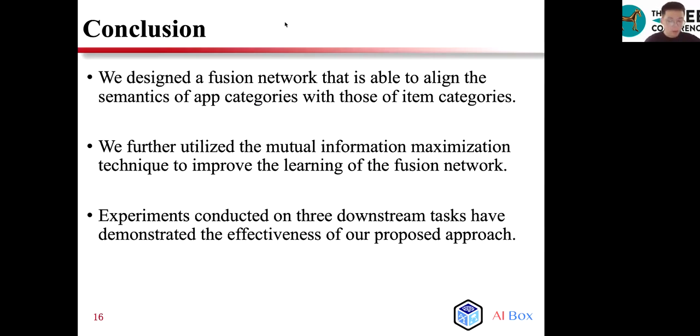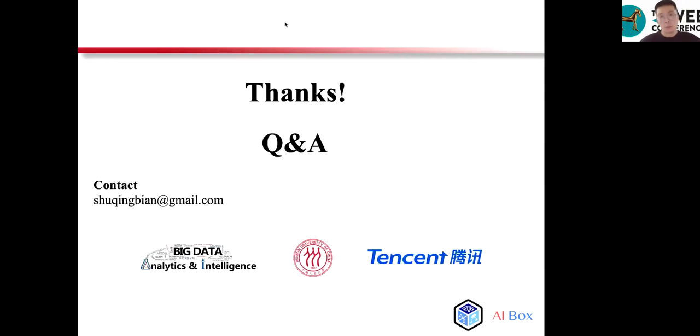Now, we conclude our work. We designed a fusion network that is able to align the semantics of app categories with those of item categories. Next, we further utilize the mutual information maximization techniques to improve the learning of the fusion network. Finally, experiments conducted on three downstream tasks have demonstrated the effectiveness of our proposed approach. That's all. Thank you.